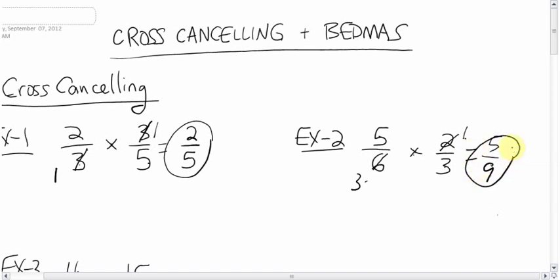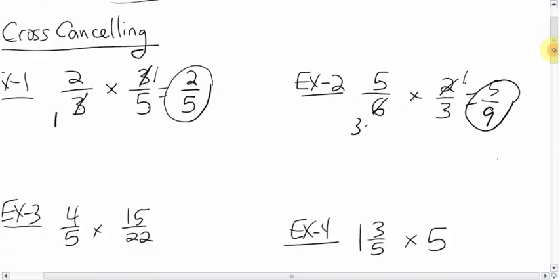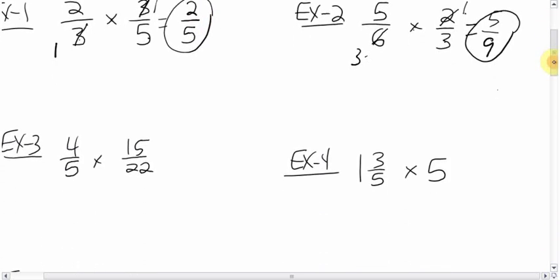The key advantage to this method is you don't have to really reduce at the end. You're kind of reducing at the start, so you don't have to reduce at the end. And a lot of mistakes people make are forgetting to reduce. So it kind of takes care of that problem for you.